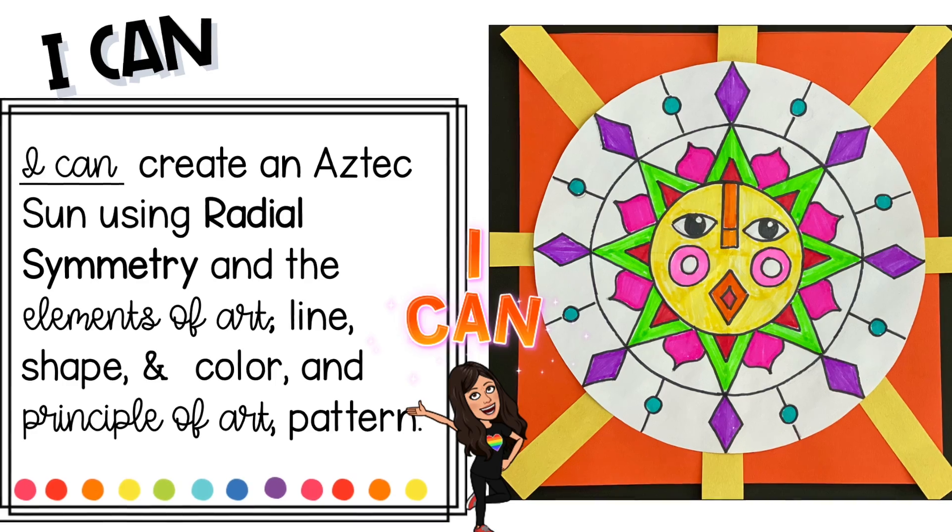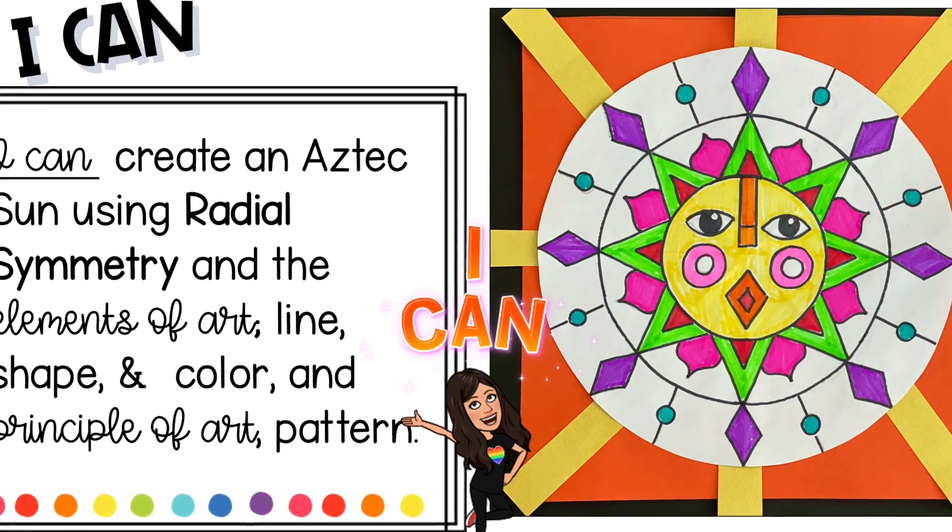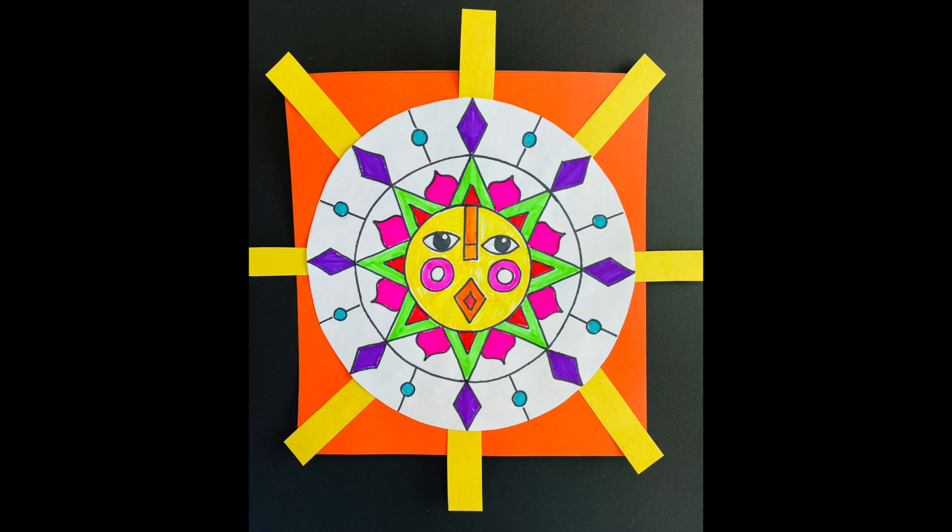Your objective is I can create an Aztec Sun using radial symmetry and the elements of art line, shape, and color, and the principle of art pattern.